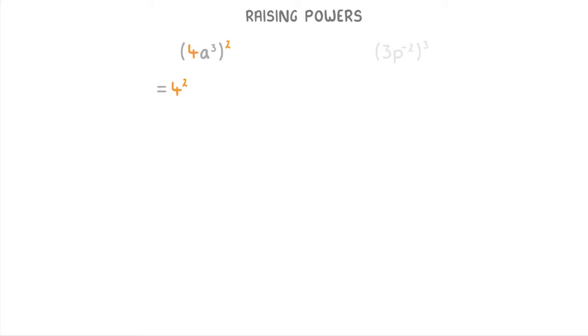For these last two examples, we've got numbers and letters inside our brackets, and in these cases it's best to think of the numbers and the letters separately. For the first one, 4a cubed all squared, think of it as 4 squared times a cubed squared, because we can apply that power of 2 to the 4 and the a cubed separately. That gives us 16 times a to the power of 3 times 2, or 16 times a to the power of 6, which simplifies to 16a to the 6.